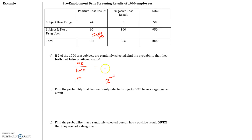Once we take that one subject out, the total number of subjects reduces to 999 because we had a thousand and we take out one subject. Out of the false positives, we had 90 subjects, but once we take one out we now only have 89 subjects who got a false positive. So the probability that they both had false positives is 90 over 1,000 times 89 over 999, which equals 0.00802.